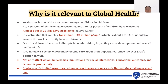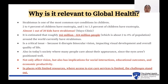Strabismus is a critical global health issue as it disrupts binocular vision, impacting visual development and overall quality of life. It not only affects vision, but also influences social interactions, educational outcomes, and economic productivity. In places with limited resources where access to eye care services is limited, it is even more challenging.